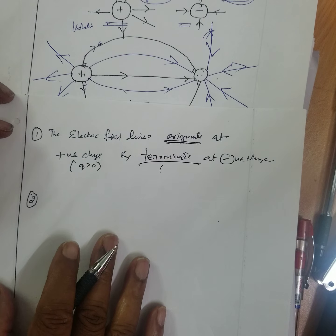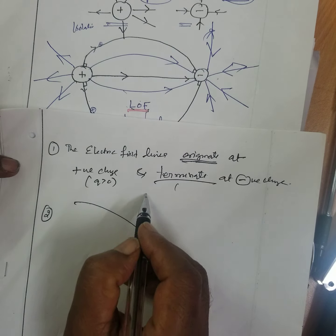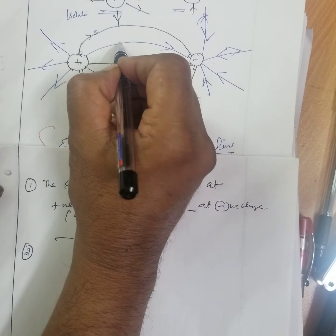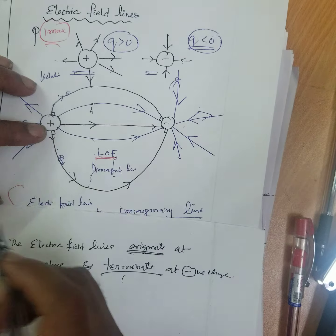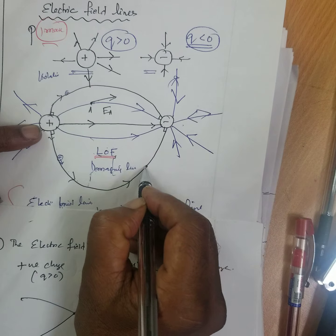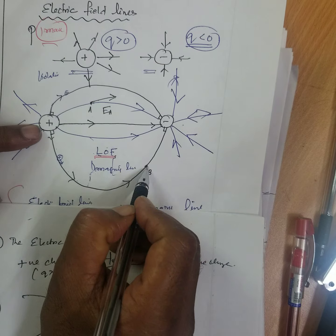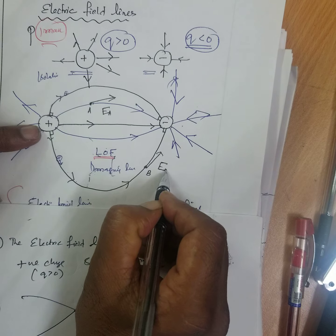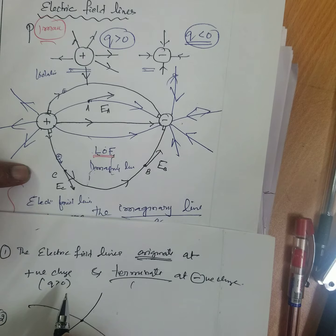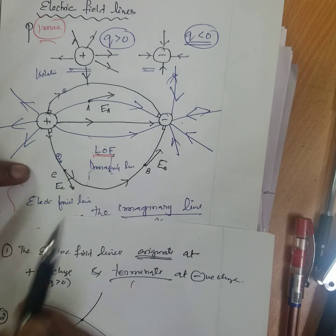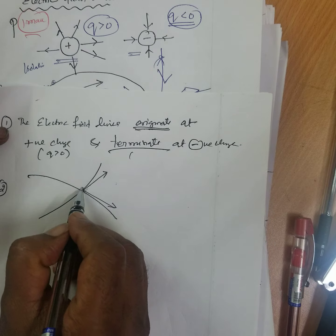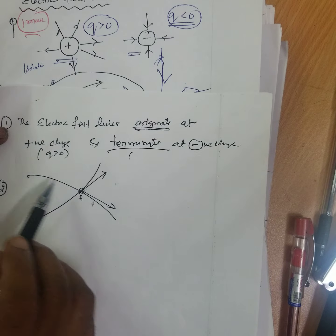Second property: two lines of force never intersect. If two lines crossed at a point A, you would need to draw two tangents at that point, giving two directions of the electric field — which is not possible. At each point, you draw a tangent to the field line to find the direction of the electric field at that point.